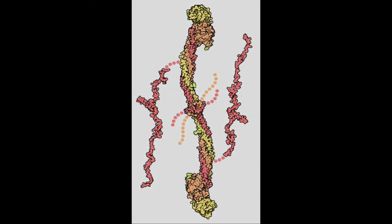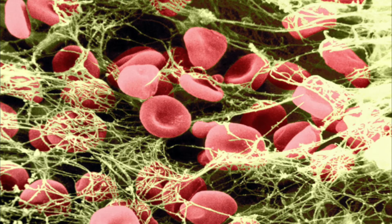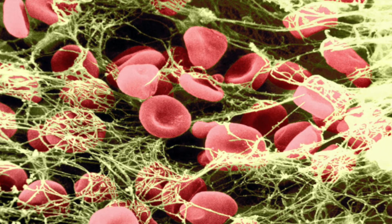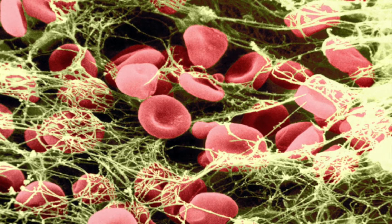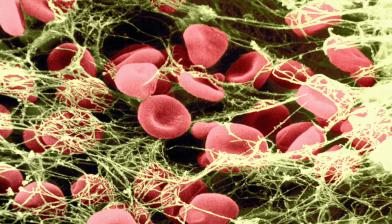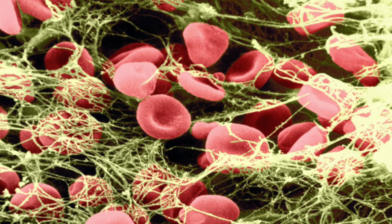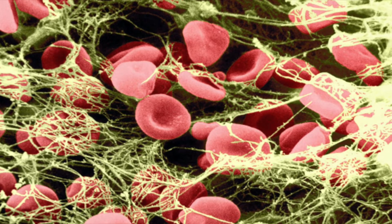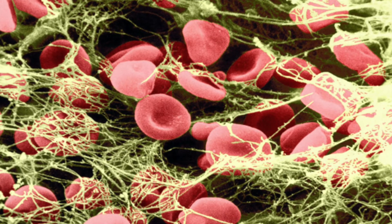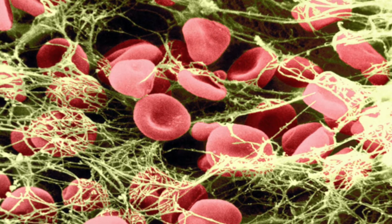Fibrin is a fibrous non-globular protein, as you can see in the pictures, and its role is to help assemble a tough structure in combination with activated platelets and red blood cells to plug the injury and form an insoluble clot that will help stop the bleeding.